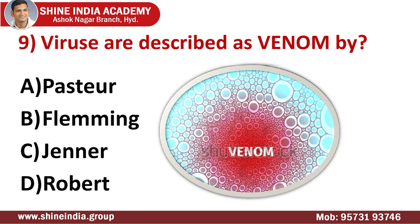Question number nine: viruses are described as venom by whom? The answer is Pasteur. Our great Louis Pasteur gave the name 'virus,' which means venom or poisonous fluid. Pasteur also gave us the method of pasteurization of milk. According to his research, certain non-bacterial pathogens caused the mosaic disease of tobacco, as these particles could pass through a bacterial filter and were infectious even after crystallization. Louis Pasteur and Edward Jenner developed the first vaccine against virus infection.